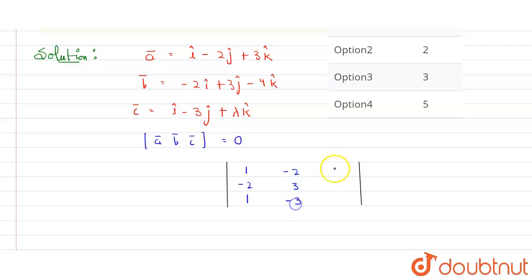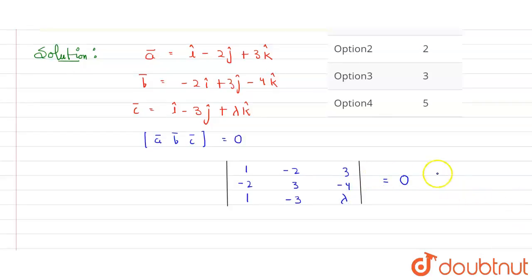Similarly, the coefficient of j is minus two here, three there, and minus three. And here I will add three, minus four, and lambda for vector c. This value must equal zero according to the equation, because vectors are coplanar.